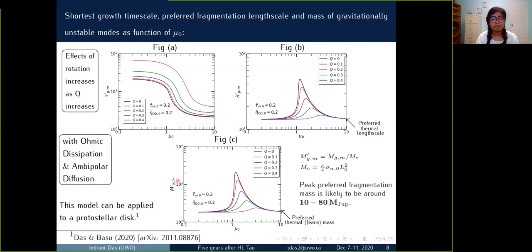This is the plot for the preferred fragmentation mass as a function of mass to flux ratio. We see the peak preferred fragmentation mass exceeds the Jeans mass by an order of up to 10 when including any diffusive parameters. And the peak preferred fragmentation masses are coming around 10 to 80 times of Jupiter mass. So this can allow a step forward to the understanding of the clump within the protostellar disk in the early embedded phase.